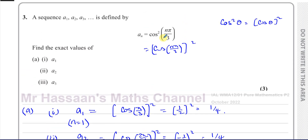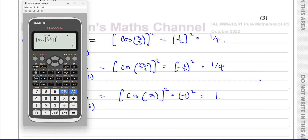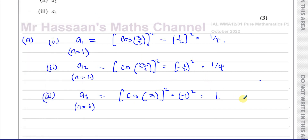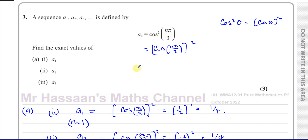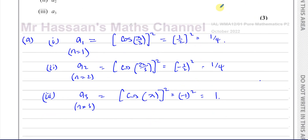Most of these sequences are periodic — the numbers repeat because trig functions are periodic. You can see that if you continue: 4 pi over 3 gives a quarter, 5 pi over 3 gives a quarter, and 6 pi over 3 which is 2 pi gives 1 again. So the sequence keeps repeating: a quarter, a quarter, 1 — and it has a period of 3, because it repeats every 3 terms.